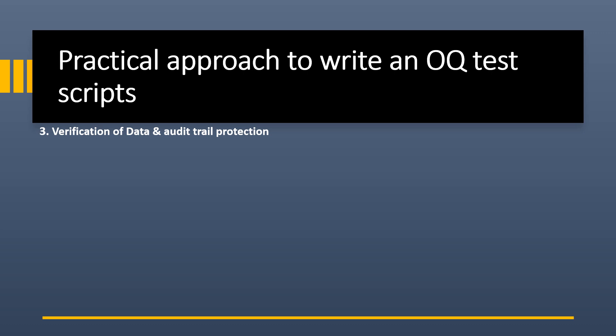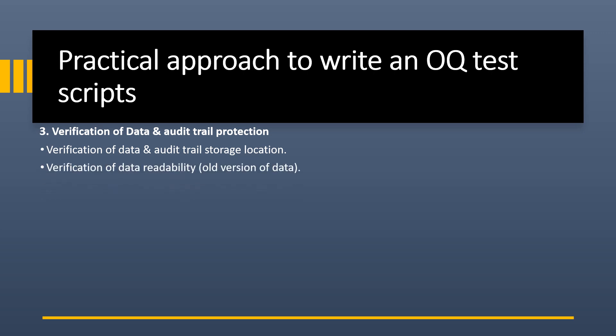Third is verification of data and audit trail protection. This includes verification of data and audit trail storage location — where electronic data and audit trails are saved, whether on a local PC for standalone systems or on a server for server-based systems. Next is verification of data readability — data should be in readable, unambiguous form, and data migrated after a software update should be supported and readable by the new version.